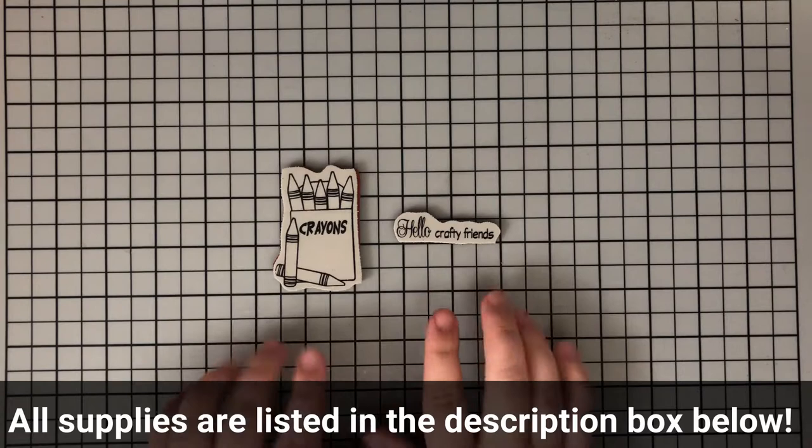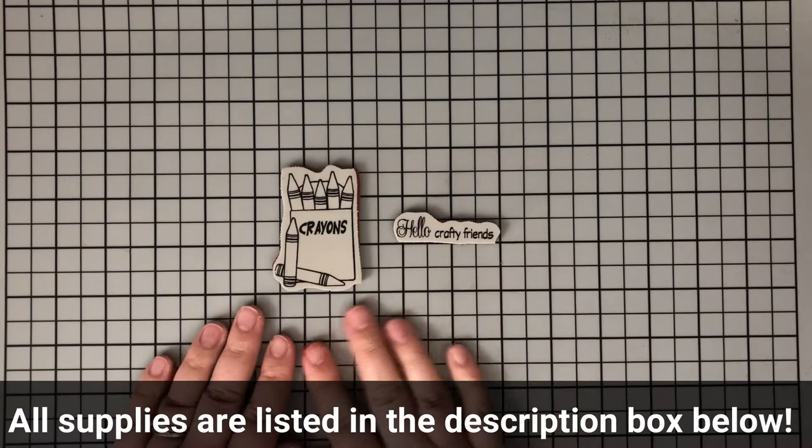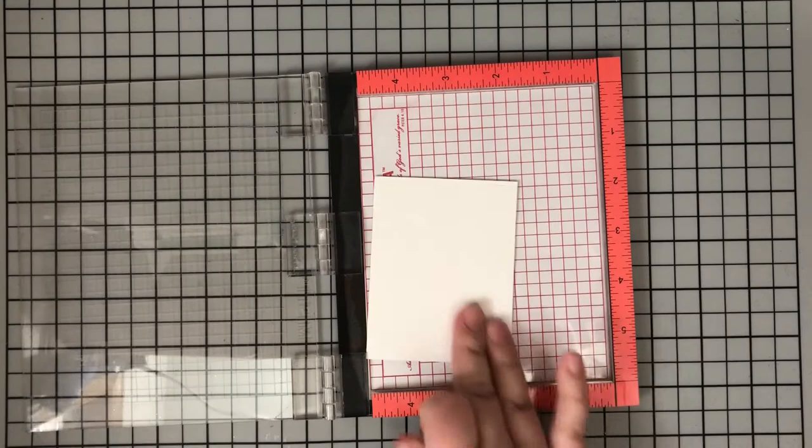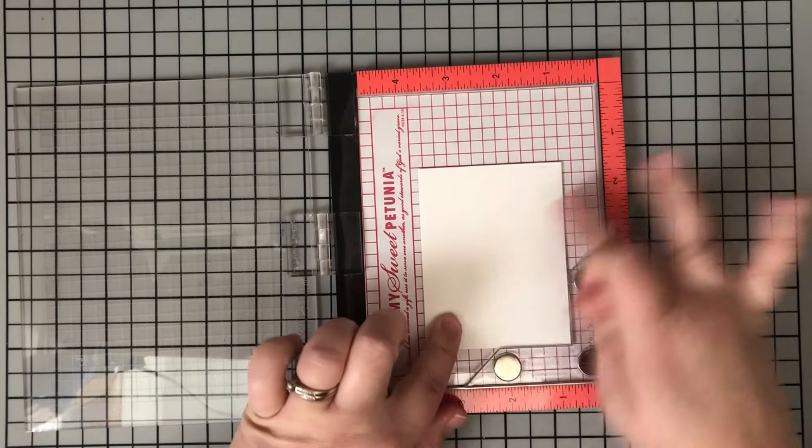If you enjoyed this video, the like button is always appreciated. So I'm going to be using these two stamps today from Cracker Box and Susie Stamps. All the supplies, ink colors, that kind of thing, it's all going to be listed down in the description box. So if you have any questions about that, you can head down there and find the answers.